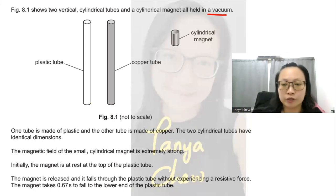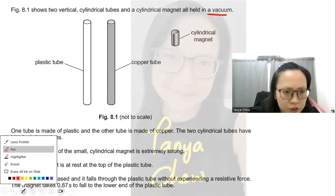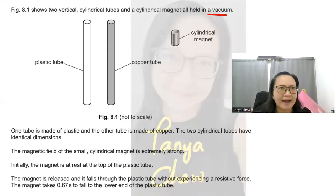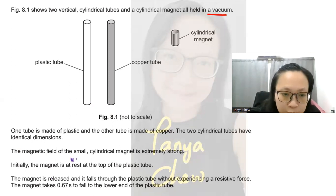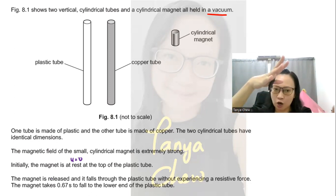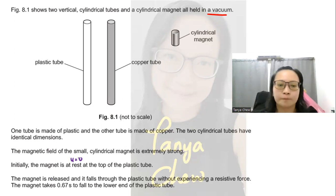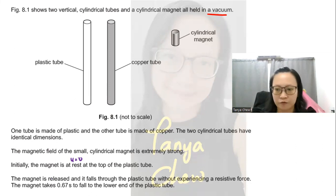Another hint: the two cylindrical tubes have identical dimensions. The magnetic field of the small cylindrical magnet is extremely strong — even though it's small, it has a very strong magnetic field strength. Initially, the magnet is at rest, so u equals zero. The magnet is placed at the top of the plastic tube, then released, and it falls through the plastic tube without experiencing a resistive force. The magnet takes 0.67 seconds to fall to the lower end of the plastic tube.